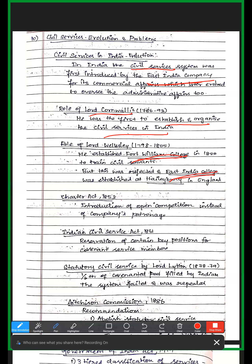Then the 1853 Charter Act introduced open competition for civil service. Before 1853, the East India Company directly appointed civil servants, but since 1853 there has been open competition for civil service recruitment.